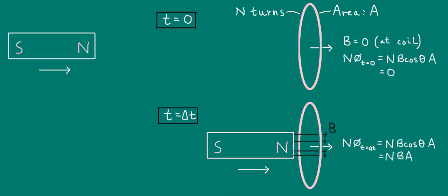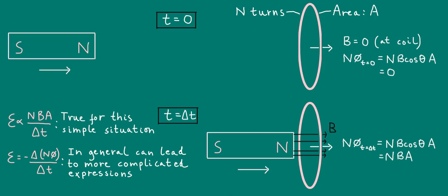Just to be absolutely clear, the relation we've just used to explain our observations is true only for this simple situation. For a more complicated situation, you would have to use Faraday's law, the general form of Faraday's law, and this can lead to more complicated expressions. What I'm saying is that NBA over Δt might not be universally applicable to every induction situation.